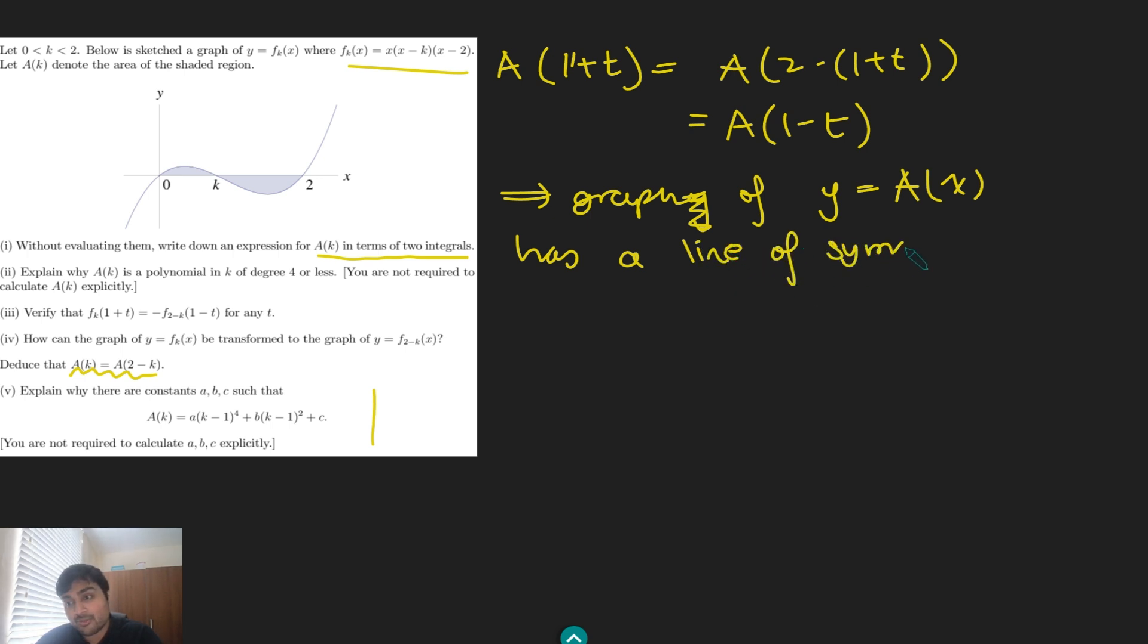Well, we want to use the previous part, and in particular, this deduction we've just made here. ak equals a(2-k). And the thing I want us to spot is if you substitute k is 1+t into this, you get this. But 2-(1+t) is just 1-t. So we get that a(1+t) equals a(1-t). And we've seen this before. This means that the graph of y equals a(x) has a line of symmetry x equals 1 for the same reasons as before. So it has a line of symmetry at x equals 1.